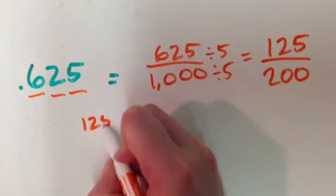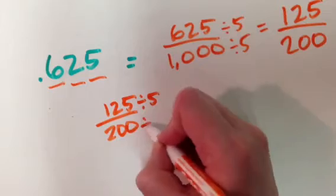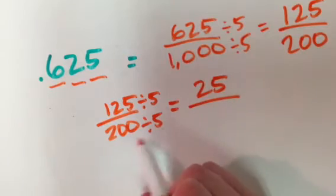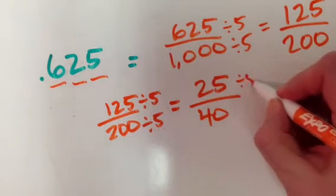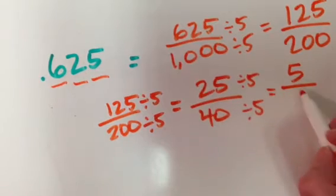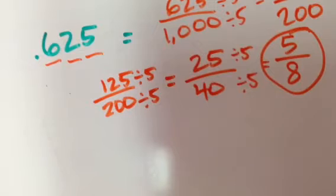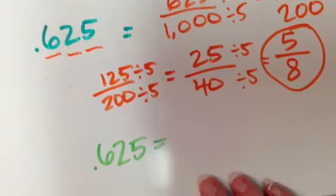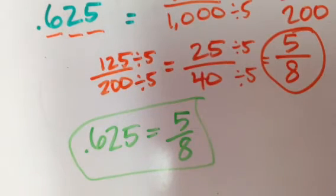These two numbers, let me write them again down here. Remember, they can be reduced by five again. 125 divided by five is 25, and 200 divided by five is 40. Oh my gosh, I can divide another five out of these guys. 25 divided by five is five, 40 divided by five is eight, and so after all of that, I can see that .625 or 625 thousandths equals 5 eighths.